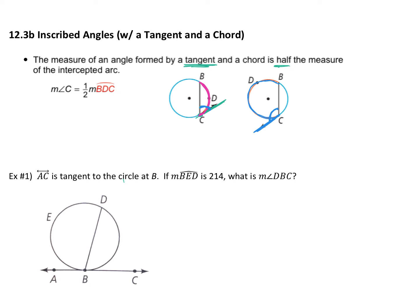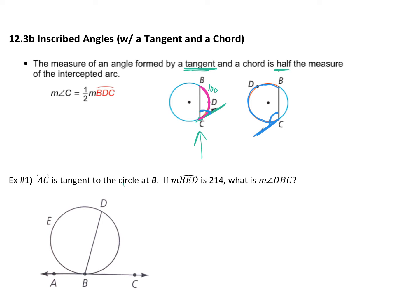Let me just give you a for instance here. Let's say in this first circle arc BC is, what do you think that is? 100 degrees? We'll go with 100. If that arc is 100, then angle C is how many degrees? 50 degrees.